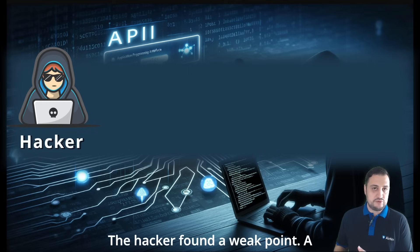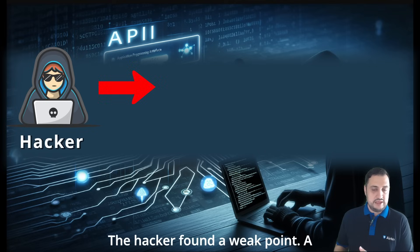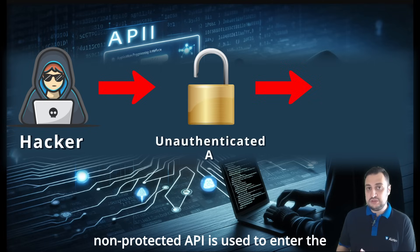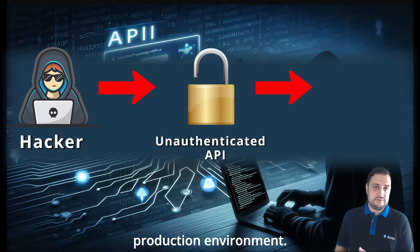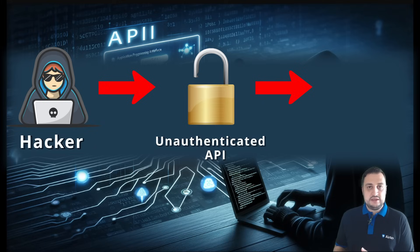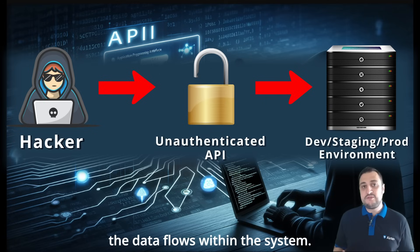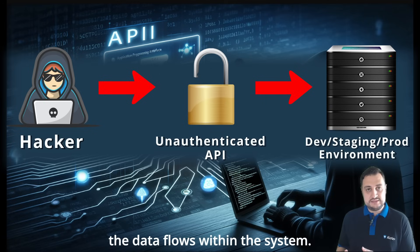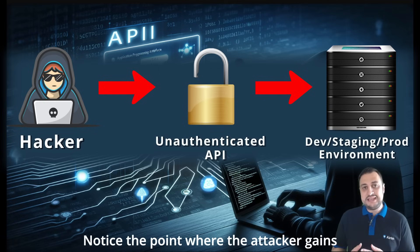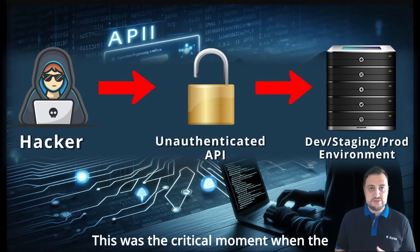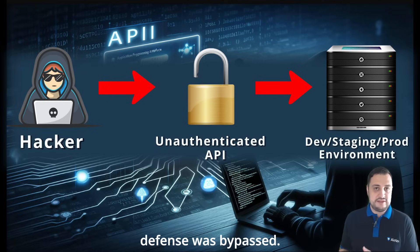The hacker found a weak point — an unprotected API — and used it to enter the production environment. The graphics show how the data flows within the system. Notice the point where the attacker gains access, symbolizing the breach. This was the critical moment when the defenses were bypassed.